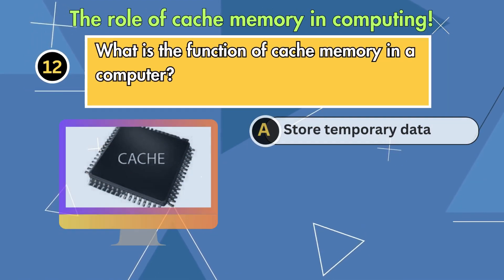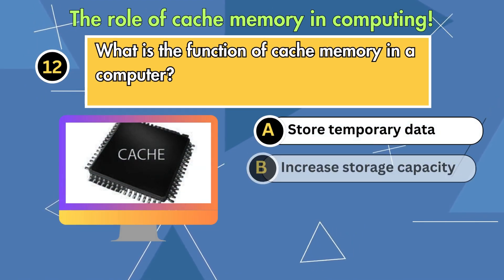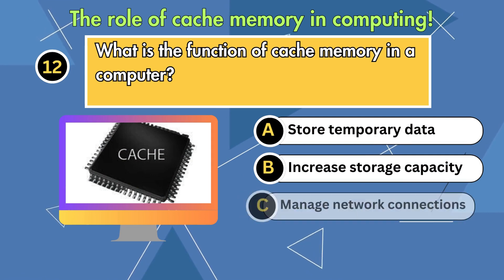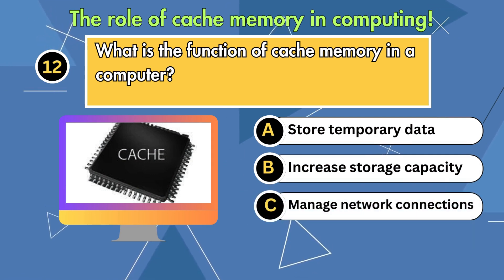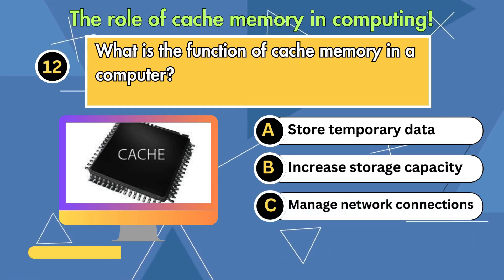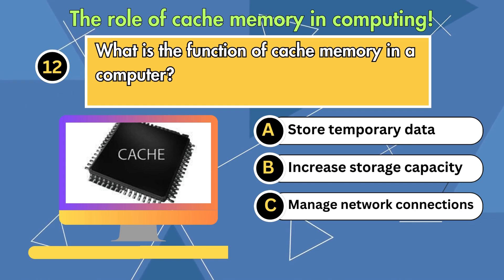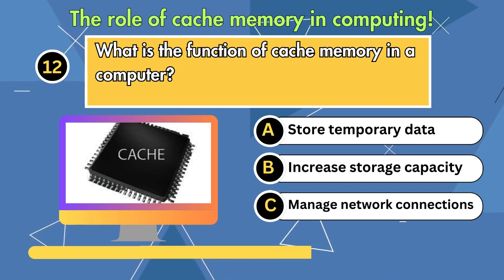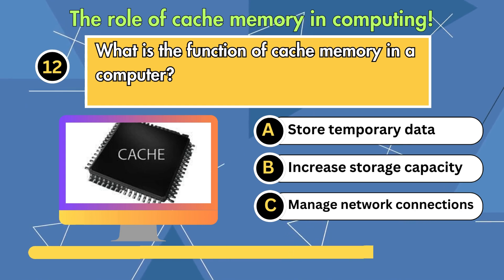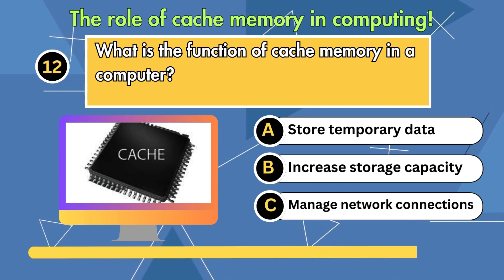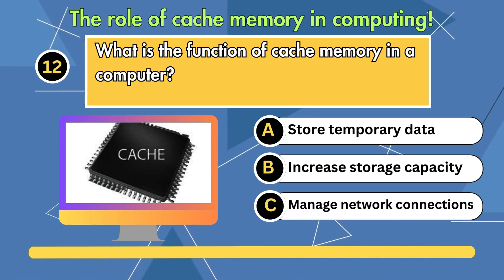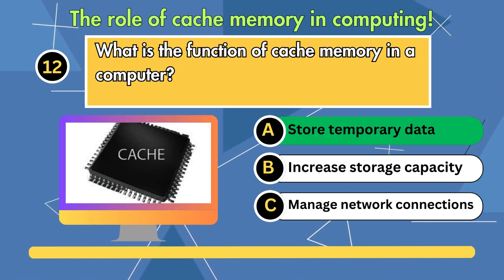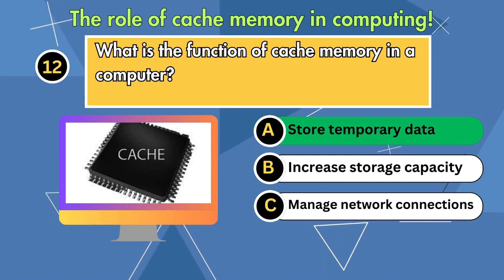What is the function of cache memory in a computer? Option 1: Store temporary data. Option 2: Increase storage capacity. Option 3: Manage network connections. Answer is store temporary data.